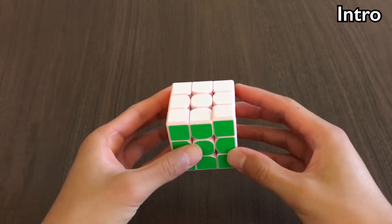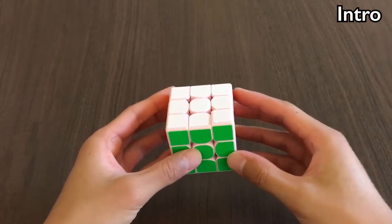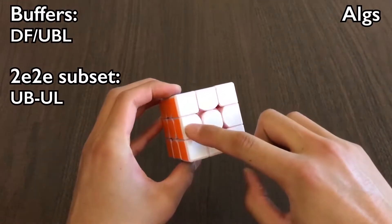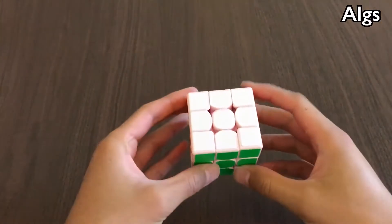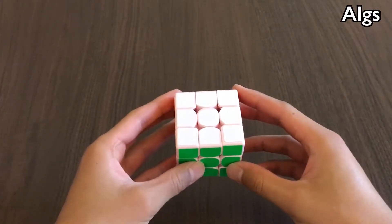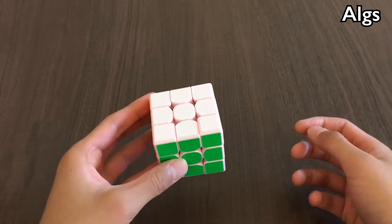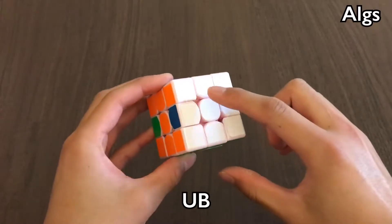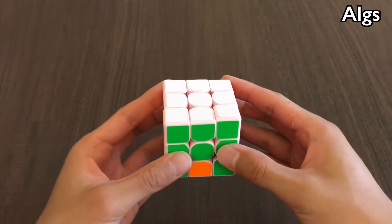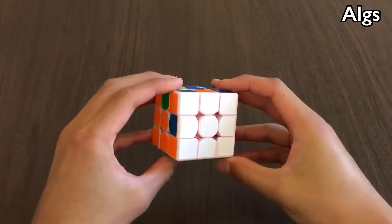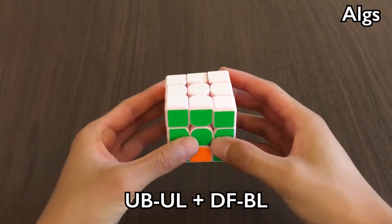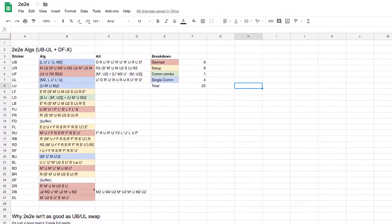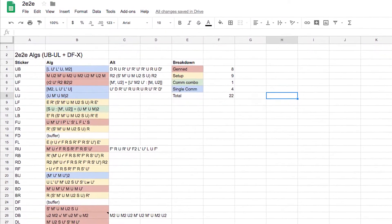If this is a bit confusing, that's okay. I have an example solved later in this video. Since my buffers are DF and UBL, I learned a subset to swap UB with UL, and DF with any other sticker. Like I said earlier, this subset is a total of 22 algs. However, it's not 22 new algs, because a lot of them are just setups to other cases. For example, the 2E2E that swaps UB and UBL, and DF and DL is this alg that was genned. And then the 2E2E for BL is just a setup into the case I just showed you. I have a comprehensive doc with all 22 algs and notes about them, so be sure to check that out.